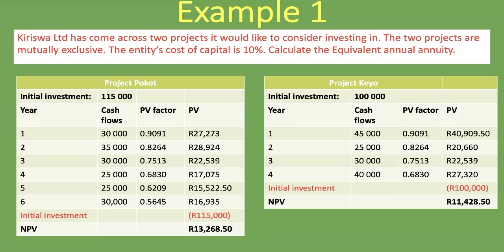Now that we have the net present value for both projects, if we compared based on NPV alone, we'd select Project POCOT because it has the higher net present value. But it's not that simple — Project POCOT takes six years while Project KO takes only four years. We need something that compares apples with apples, and that is the equivalent annual annuity.